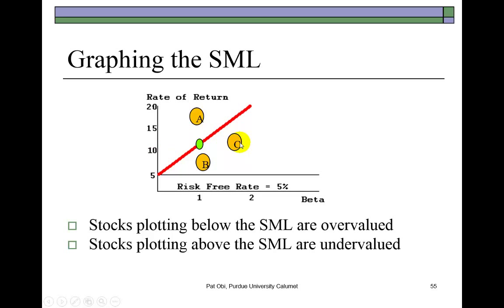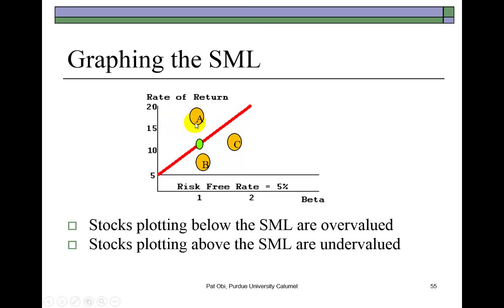Stock C is also overvalued because its beta is close to 2, yet it and the green dot — whose beta is 1 — lie on the same horizontal line, meaning both are expected to yield 10%. For the risk stock C has, it should offer a return up higher, but it isn't. Therefore, if you have stock C, you want to get rid of it; if you don't, you don't want to touch it. In general, all stocks plotting below the line are overvalued and should not be selected. Stocks plotting above the line are undervalued and should be included in your portfolio. This red line is our yardstick — the Security Market Line equation.